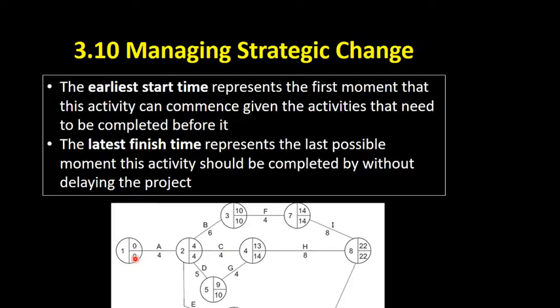The key thing to remember is that the two numbers on the right-hand side are the important ones. The number on the left is just a number for the node. The top right number in each node represents the earliest start time, which is the first moment that activity can commence given the activities that need to be completed before it. The latest finish time is in the bottom right of the node, and that represents the last possible moment the activity should be completed without delaying the project overall.